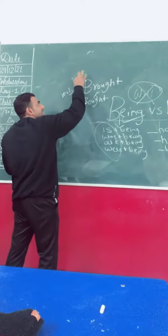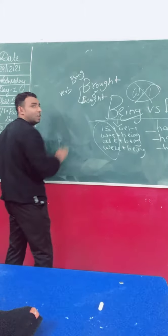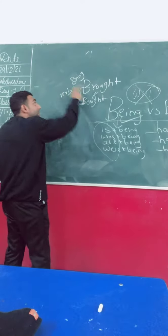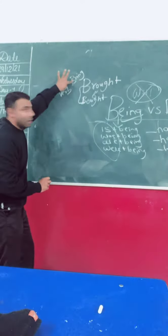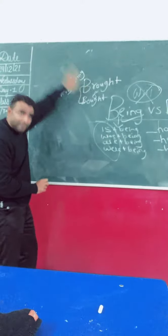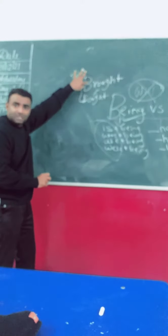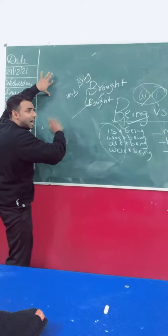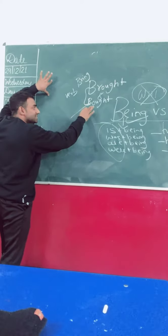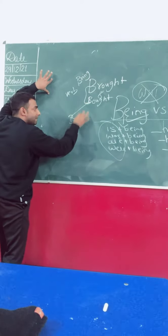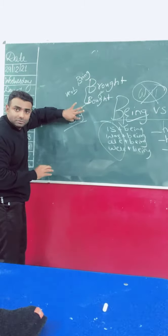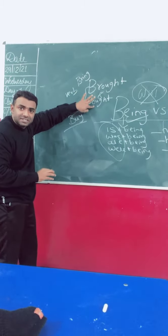Brought is the second form of the term bring. First form of verb, second form of verb and the third form of verb is also the same. But there is no r in between. This is the second form of verb. And the third form also remains the same.